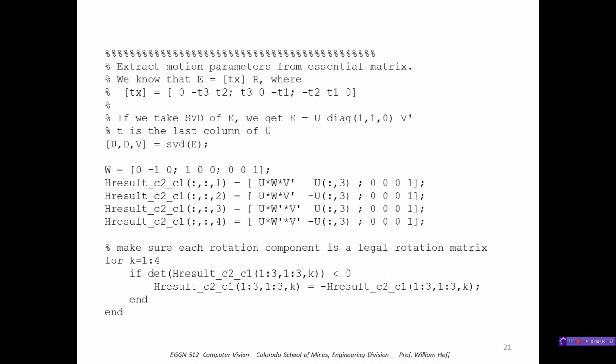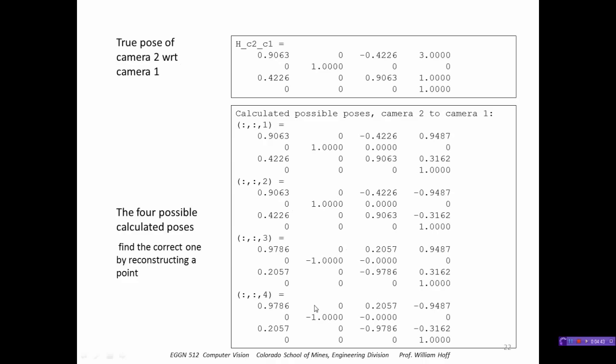Okay so let's look at how to do this. Well first of all this is the code that determines the four combinations of translation and rotation. Here we've taken the SVD of E, here is the rotation, the translation combinations of U or negative U, and here are the rotation matrices. This part just ensures that the rotation matrices are right-handed, namely that the determinant is a positive one and not a negative one. If it's not, then we have to take the negative of the result.